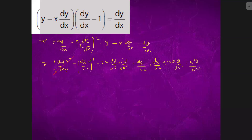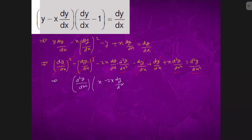We have an interesting thing coming out: this cancels, this cancels. If you see, we have d²y/dx² common, and we can write this as d²y/dx² times (x minus 2x·dy/dx minus 1) equals to 0.